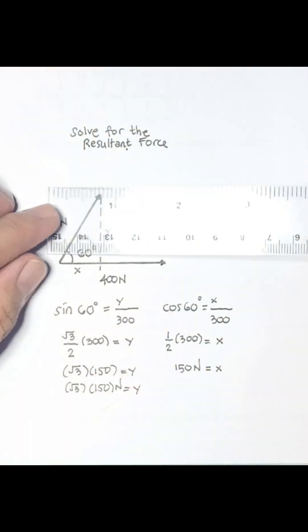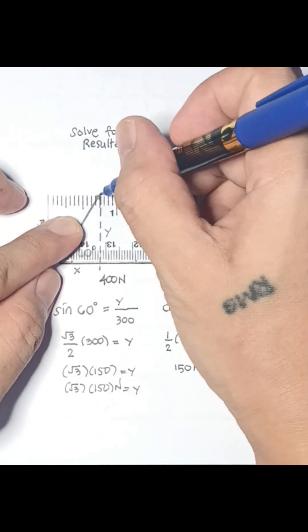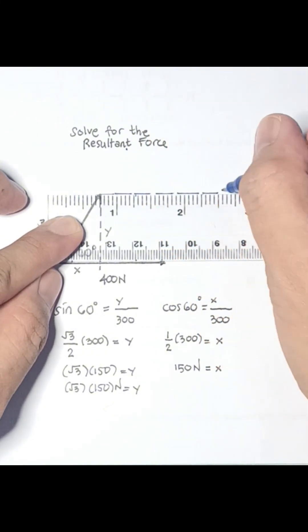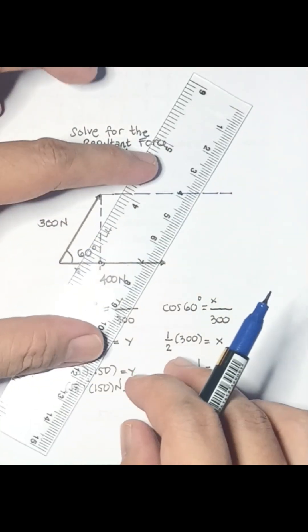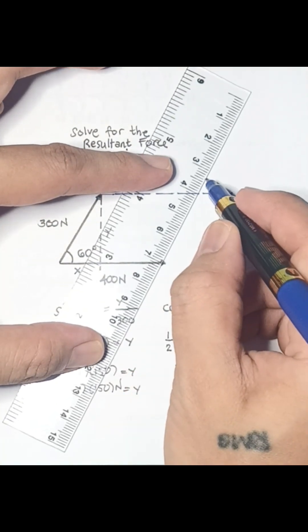Then we will draw lines that are parallel to the given forces. These lines are not necessarily the same length as the original arrows because they are sketches to trace the resultant force.